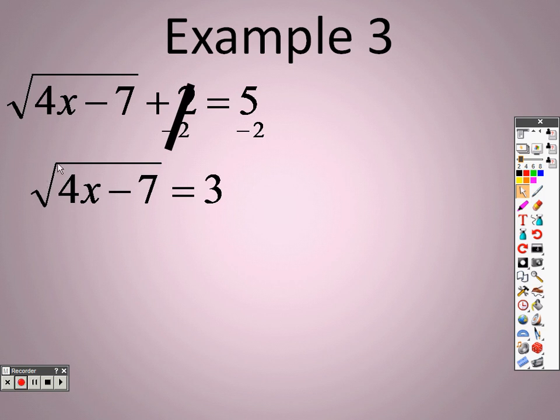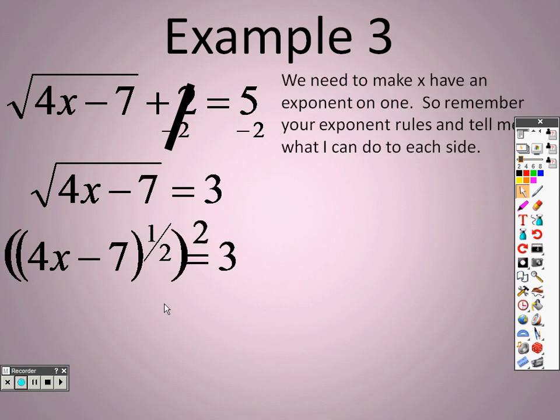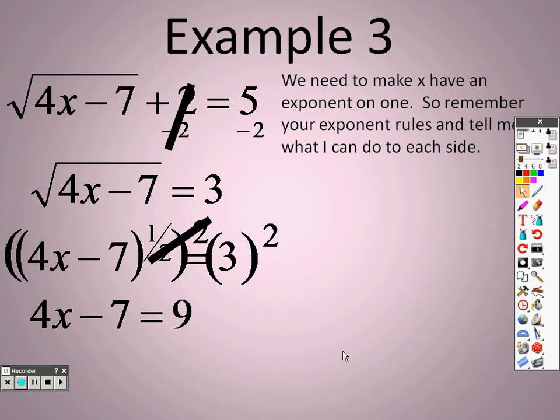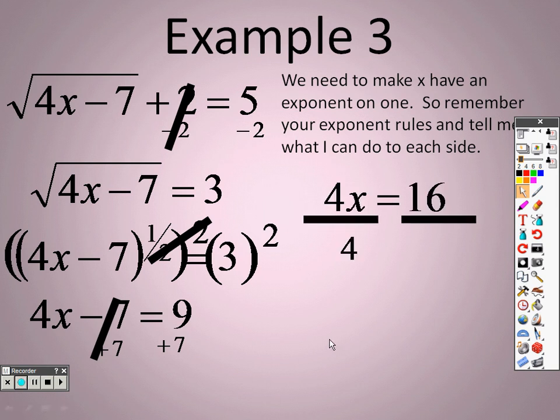Since this is the square root, the opposite of a square root is a square, or you can think about it as it's all to the 1 half power. So, what can I do to both sides? What's the reciprocal of 1 half? Well, that's squaring. So, I take everything to the squared power, right? So, I end up with 4x minus 7 equals 9. I add 7 to both sides, because I'm trying to get x all by itself. So, I end up with 4x equals 16. I divide both sides by 4, and I get x equals 4 as my answer.